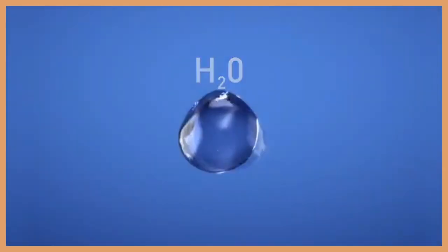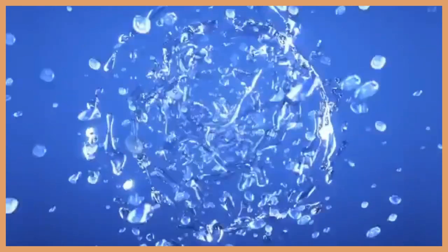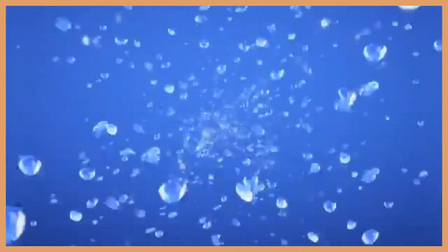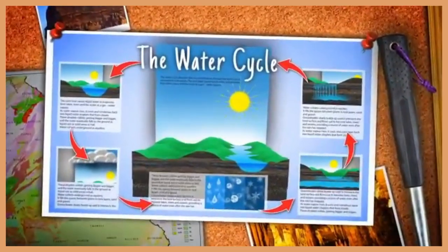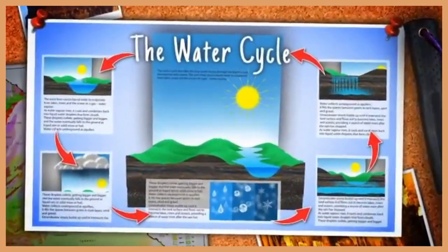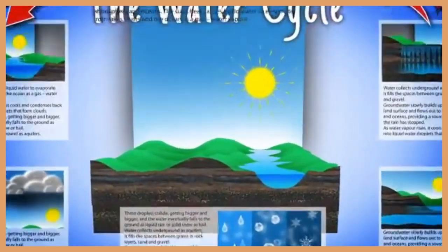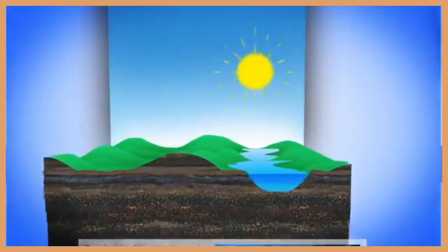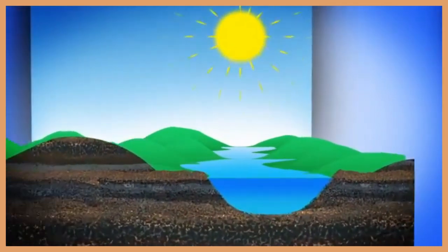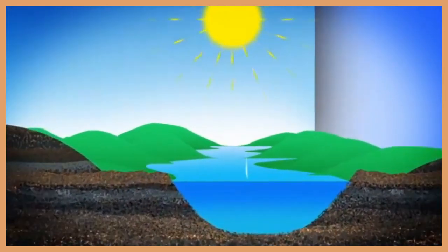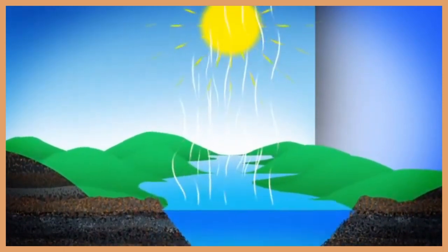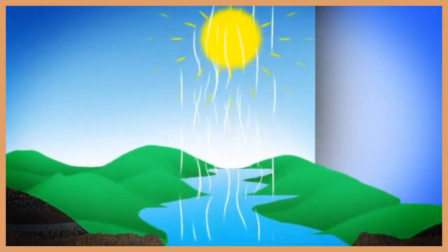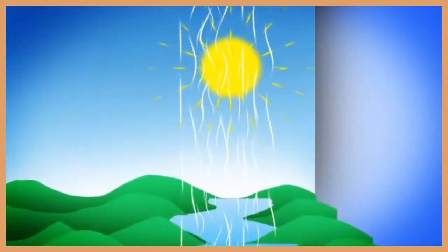Each water droplet contains billions and billions of water molecules. The water cycle describes the way water moves through the Earth's crust, atmosphere and oceans. The sun's heat causes liquid water to evaporate from lakes, rivers and the ocean as a gas, water vapor.